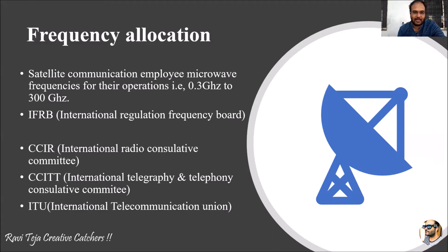Satellite communications employ microwave frequencies for their operations, that is 0.3 GHz to 300 GHz. For satellite communication, we require microwave frequencies or signals in the range of 0.3 GHz to 300 GHz.